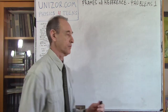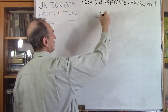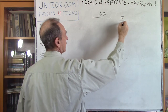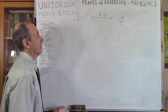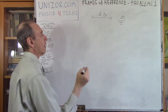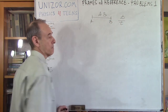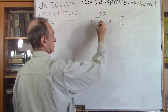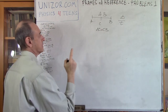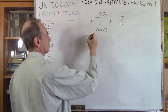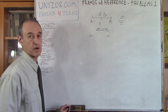Next, we'll talk about average speed. Average speed is basically total distance divided by total time. We have two cars. One car goes from point A to point B: half the distance with speed U, and the other half with speed V. The question is: what's the average speed?